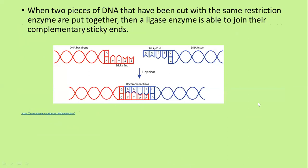This is the part that was left out. When two pieces of DNA that have been cut with the same restriction enzyme are put together, they have complementary sticky ends. When they are put together with a ligase enzyme, they are able to form hydrogen bonds between the complementary bases. What has now been formed is recombinant DNA — in other words, DNA that has parts from two different organisms put into it.